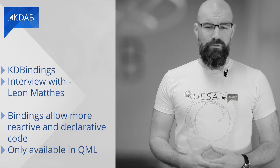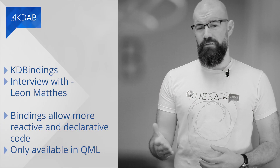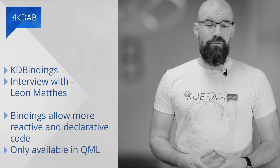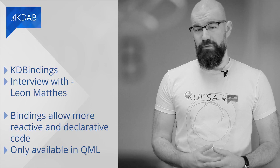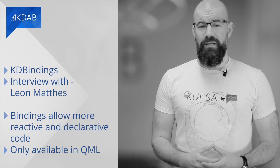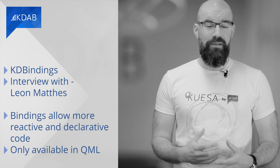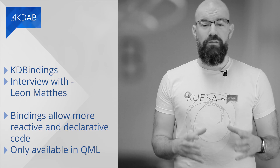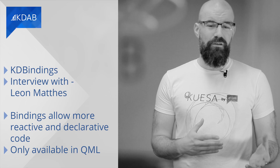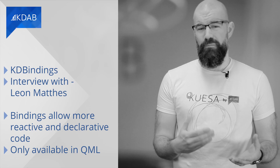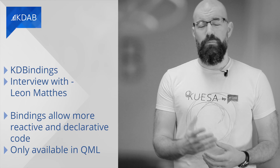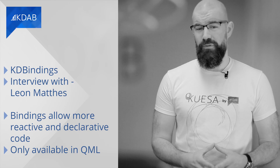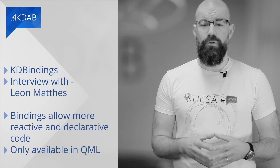As a Qt developer, you certainly know about signals, slots and properties. Those of you who have used QML will know that property bindings are super useful and cool. Bindings allow us to write more reactive and declarative style code. However, they're only available within QML, which means there are no compile time errors when you do something wrong. Earlier this month, KDAB released KDBindings to make these useful and comfortable techniques available also in pure C++.